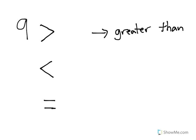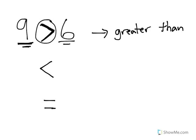I could write 9 is greater than 6. The reason it's important to know that greater than faces this way is because this is how you read the problem — you say 9 is greater than 6. We don't say 9 is less than 6 because that's not true. So greater than will always be pointing toward the first number when that first number is greater than the second number.